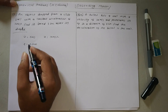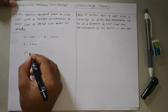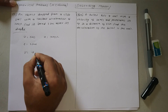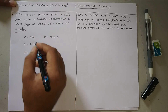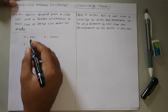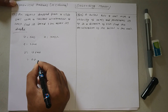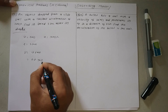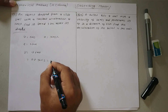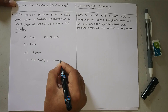We have to find v. So v equals u plus at. u is 0, a is 10, and t is 2. So v comes out to be 20 meters per second.